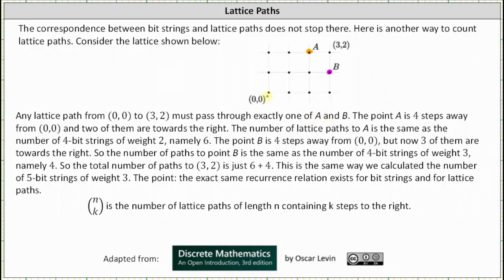Any lattice path from (0,0) to (3,2) must pass through exactly one of the points A and B. The point A is four steps away from (0,0), and two of them are towards the right. One such path would be up two and right two. The number of lattice paths from (0,0) to point A is the same as the number of four bit strings of weight two, which would be 4 choose 2, which equals 6.